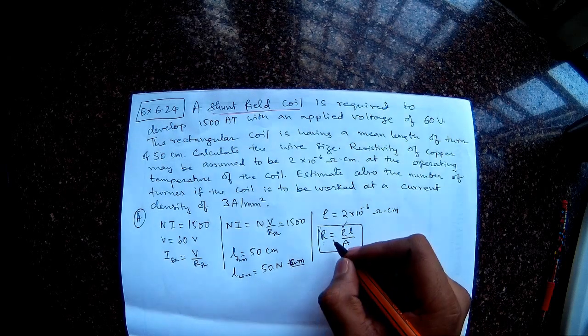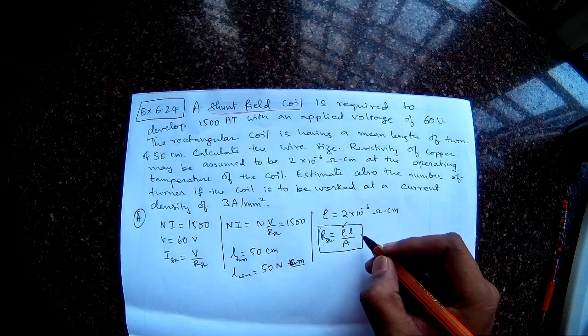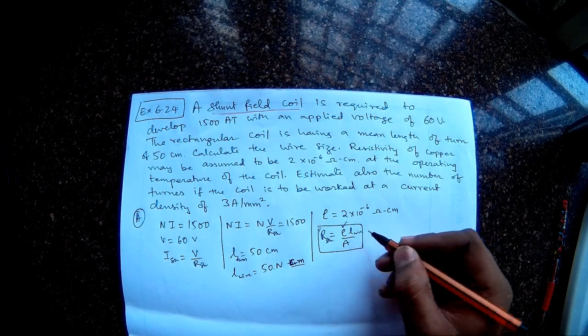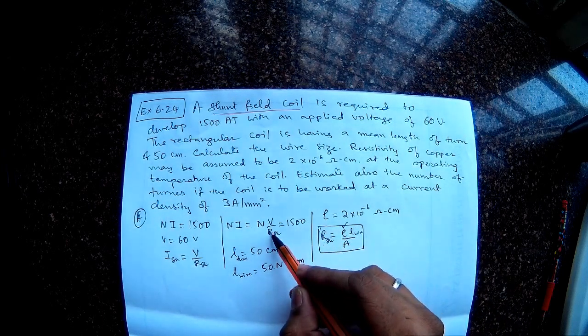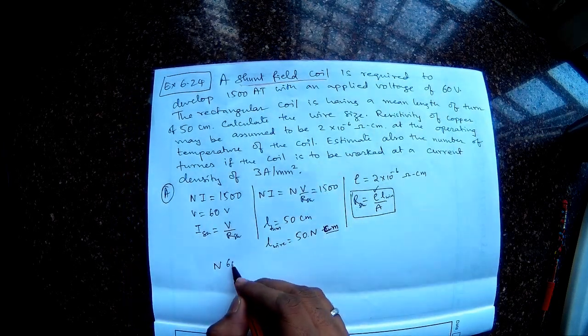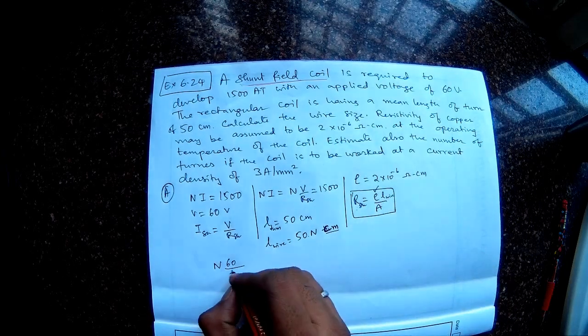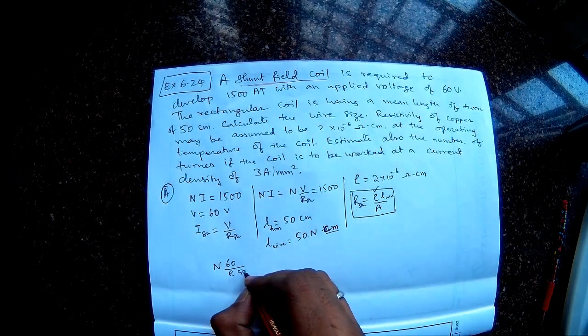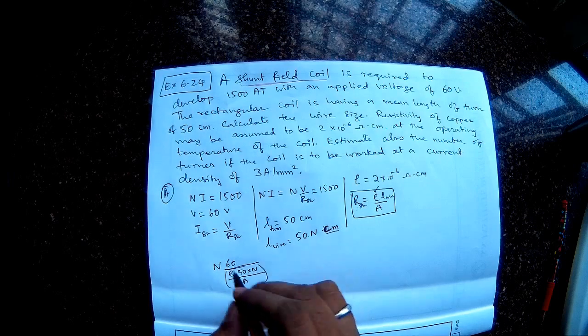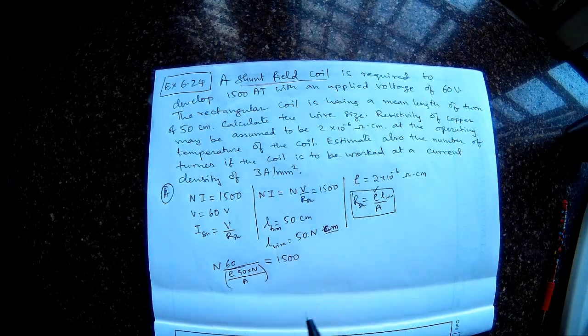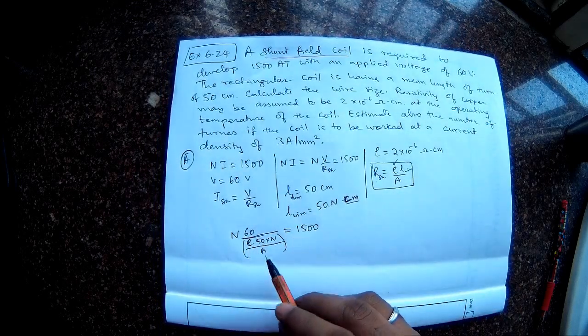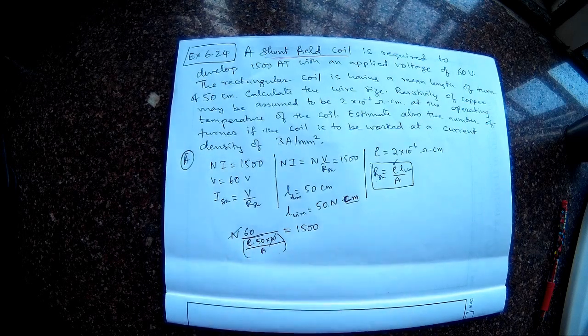Now if I substitute this for shunt field, so resistance of the shunt field will be the rho into length of the entire wire, and then this one I can substitute in this equation. So what do I have? N into the voltage is 60, so divided by this R. So that is rho into length of the wire, 50 into N, divided by the area of cross section. So this entire quantity is nothing but 1500 given in the question. So now this rho is also known. So if you see, the number of turns get cancelled out.